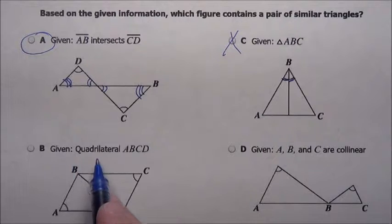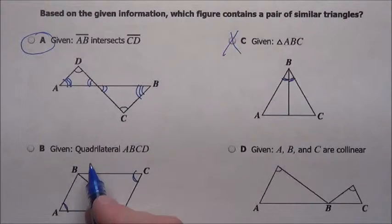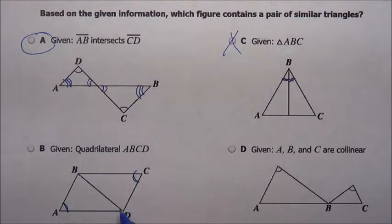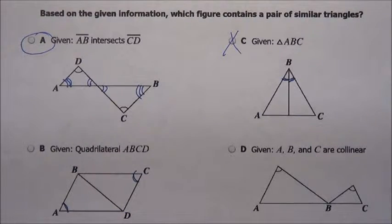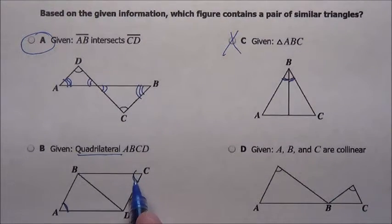Let's go to Choice B. Given quadrilateral ABCD. We know these angles are equal. But quadrilateral just means four sides — we don't know enough. If it were a parallelogram, yeah, we could probably come up with some stuff. But we can't, because it just says quadrilateral — it's not saying it's a parallelogram. It just says that angle and that angle match. B's out.